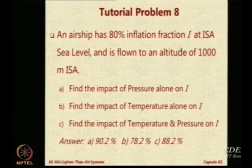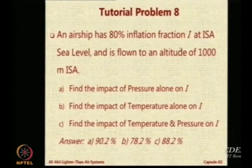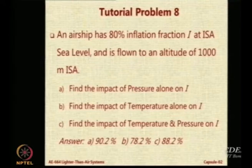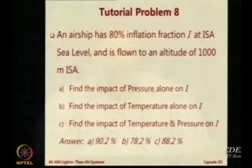The airship has 80% inflation fraction at ISA sea level condition, and it is flown to an altitude of 1000 meters ISA. How will you estimate the ambient pressure at 1000 meters above mean sea level? Under ISA conditions, the temperature at sea level is 288 degrees Kelvin and the pressure is 101325 Pascal. How do you get the temperature and pressure at 1000 meters ISA?